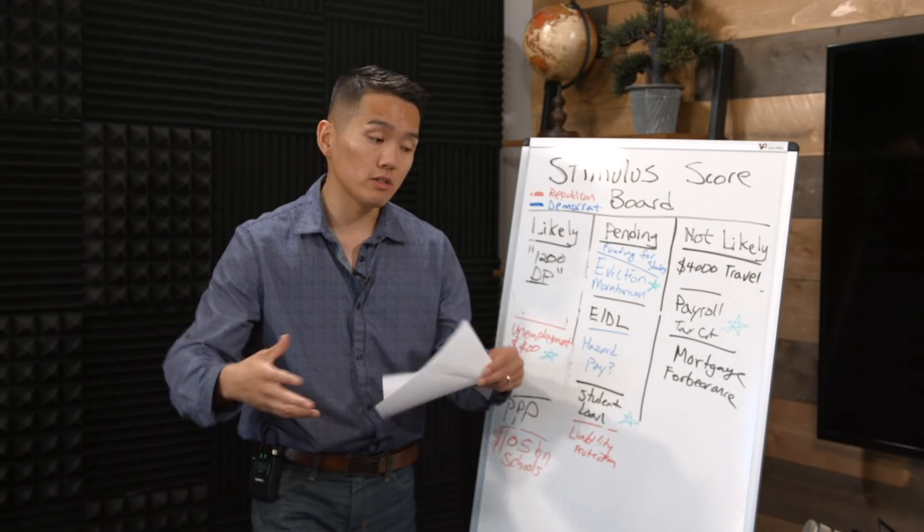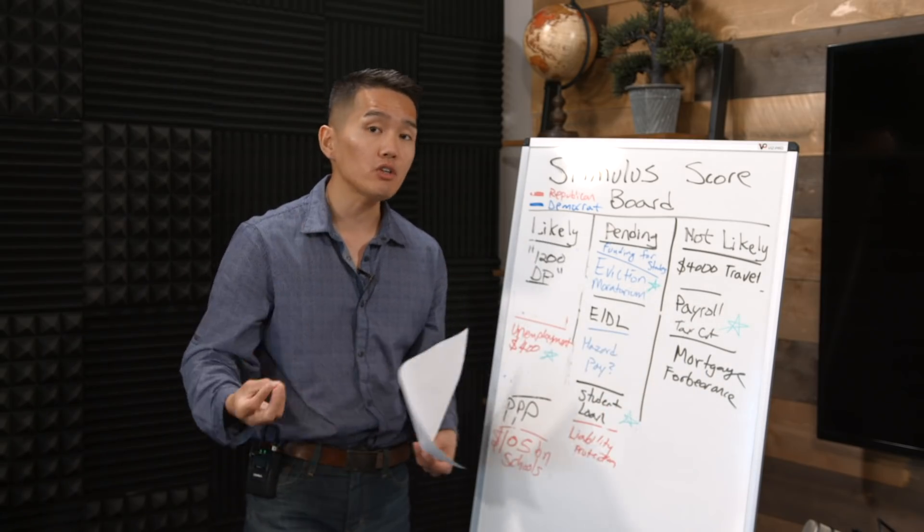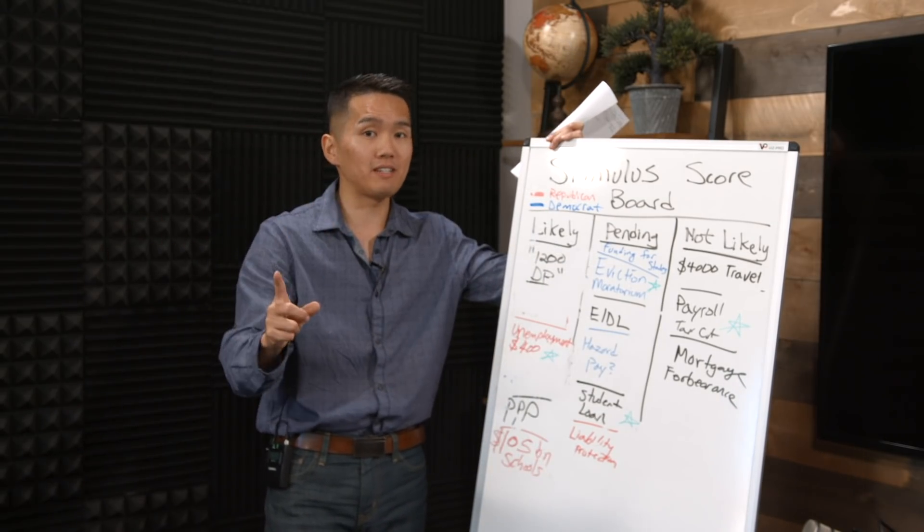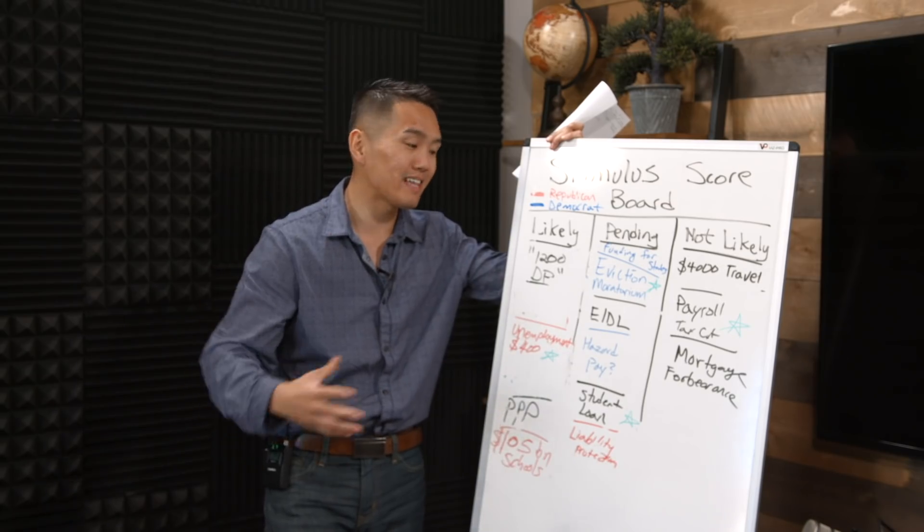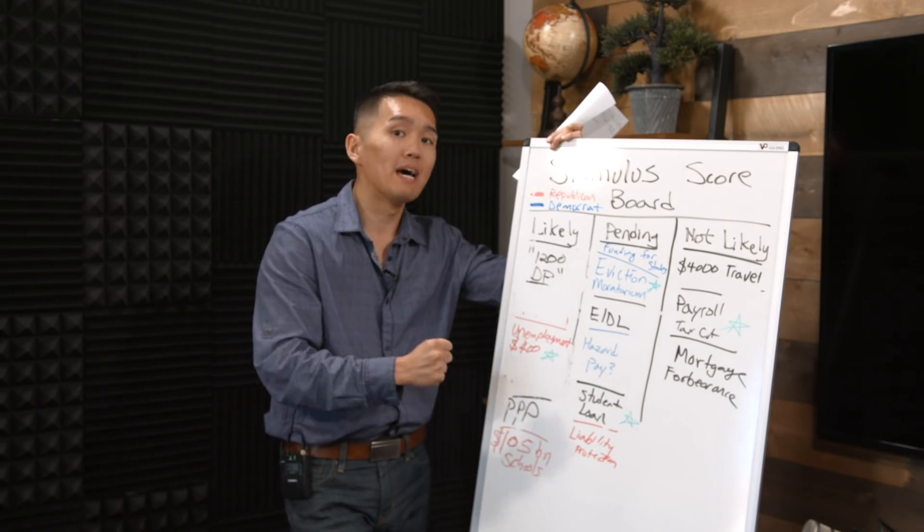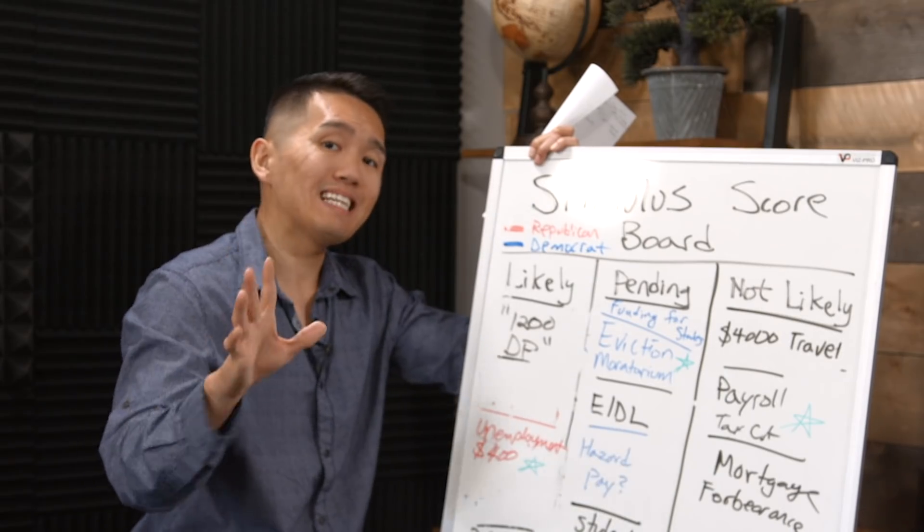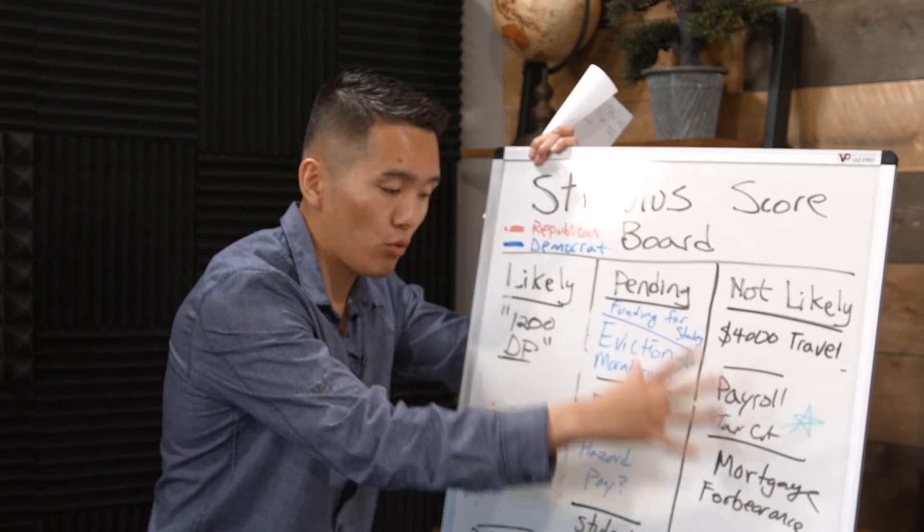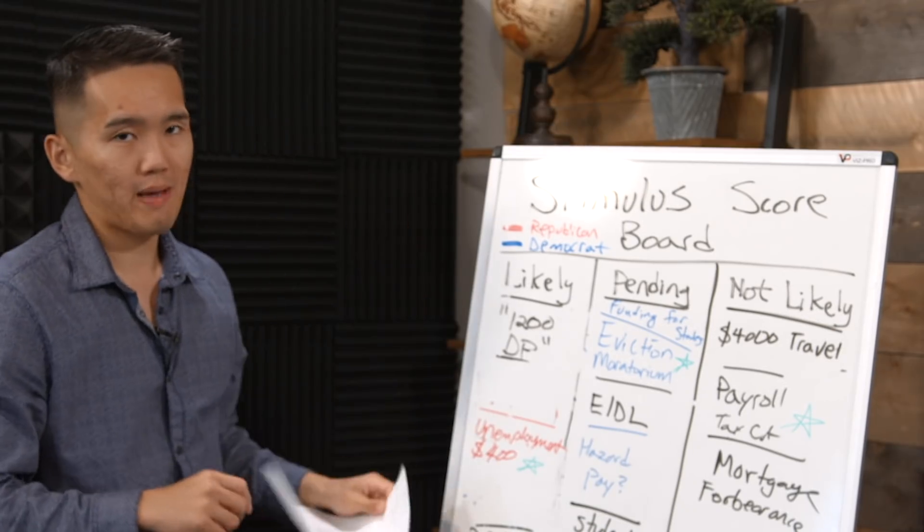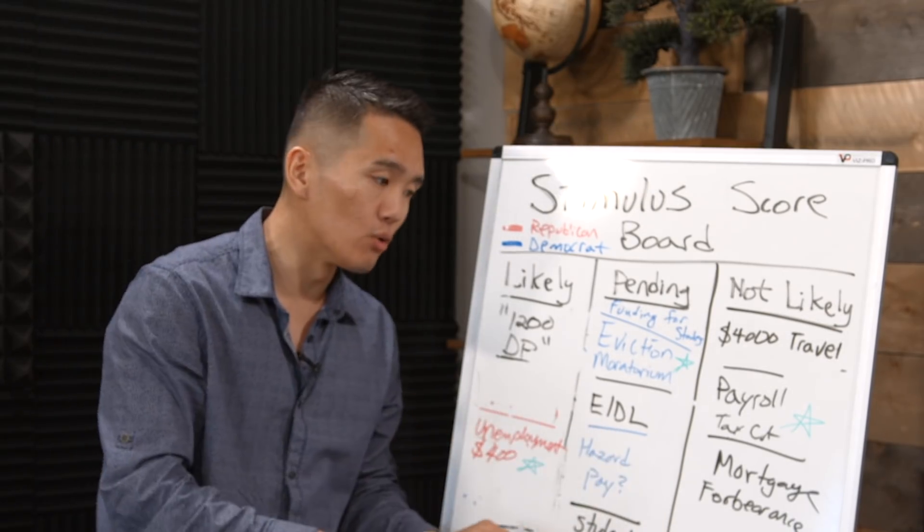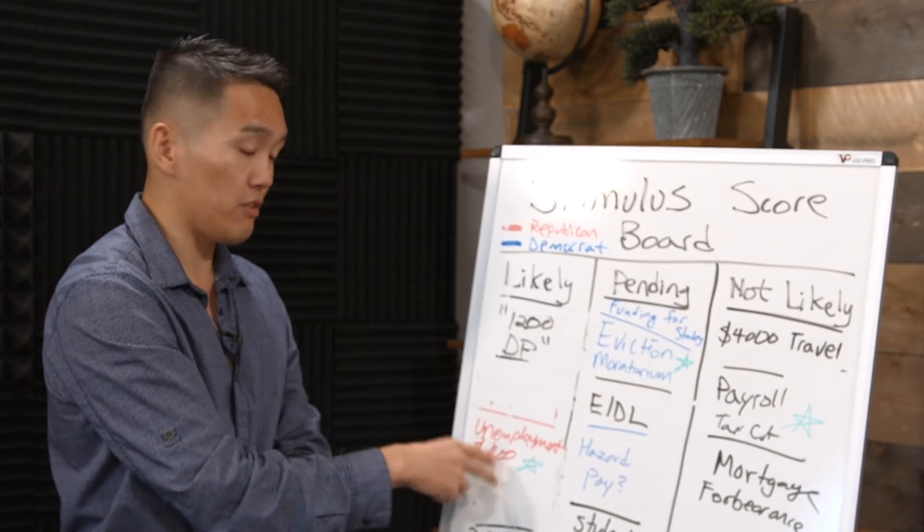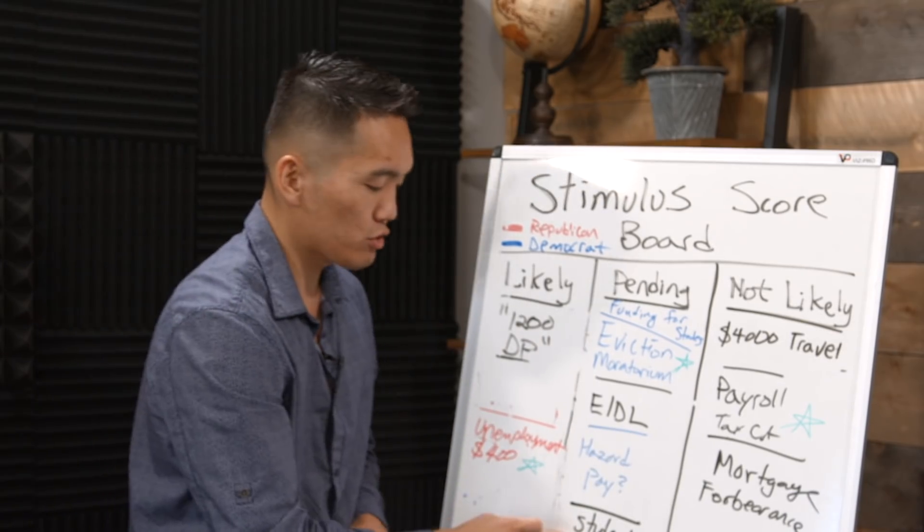In order for the President to create more funding or to print new checks, it has to go through Congress. Congress has the pocketbooks for the government. The President does not. That's a separation of power issue. President Trump cannot create new stimulus checks. That is why we're not seeing the $1,200 direct payment as part of the executive order portfolio, because that requires additional printing and funding, which requires Congress permission to make it happen.